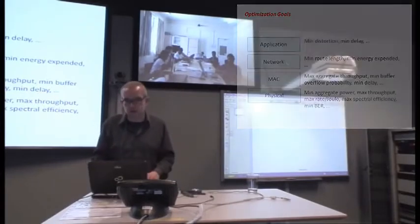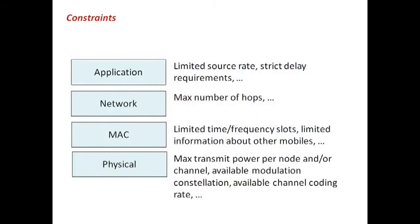And then all of that is constrained by a set of things. At the application layer, maybe you have some strict delay requirements. At the network layer, you may have a maximum number of hops that your traffic may traverse. At the MAC layer, you may have limited time slots that you want to share among the different users. At the physical layer, there may be the maximum transmit power, the available modulation types that you can support, available channel coding rates, etc. So in all of the examples of approaches that I will discuss, ultimately the problem can be viewed as a set of parameters, set of optimization goals, and a set of constraints.